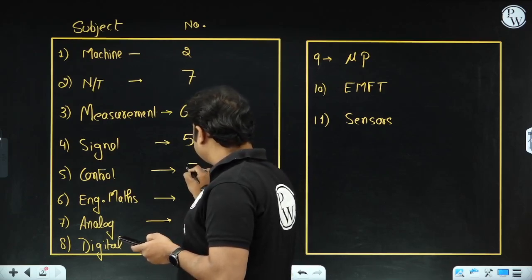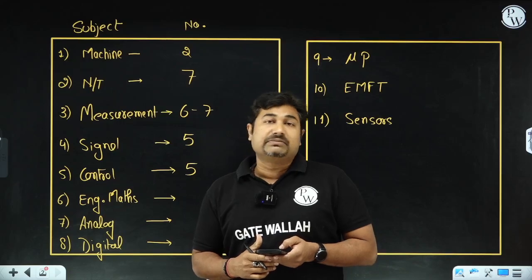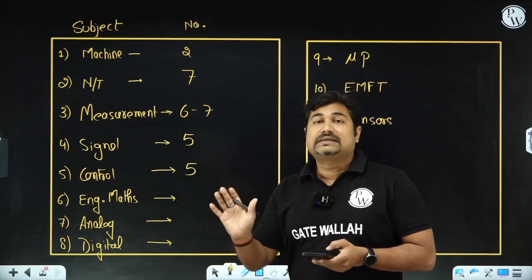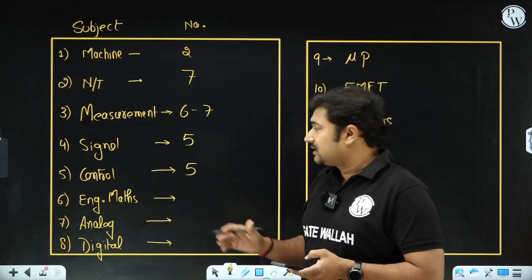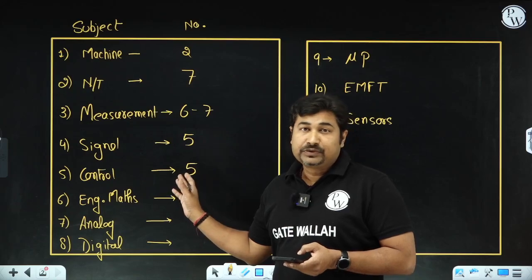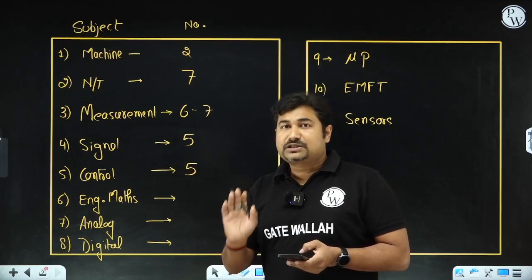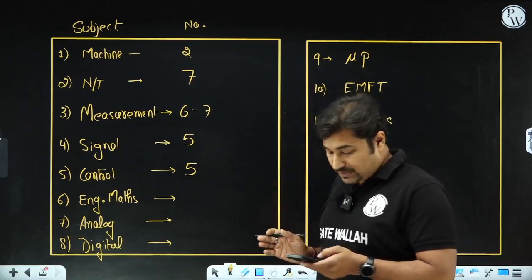Control systems has five questions. Control system is a little bit tricky and we also found there is a possibility that two questions may get bonus in NAT type. One is 100% bonus and one may go in the NAT type, the one asked from the compensator. The wordings are not proper for that particular question. Rest of the questions are good and you can easily solve. Even the Nyquist question is very good.